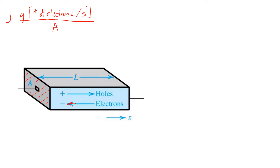Current density is indicated using the symbol J, and we use a subscript N to denote that this is the current density arising from negative charge carriers or free electrons. You'll notice that this has units of charge, or Coulombs, given by the symbol Q, per second, per cross-sectional area, so per meter squared.